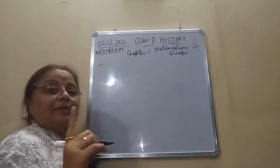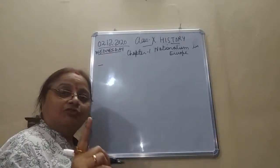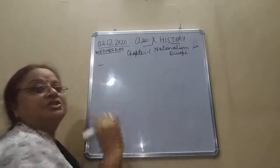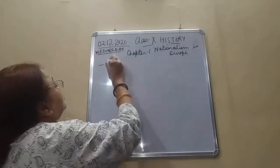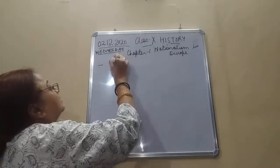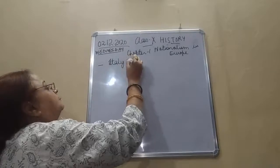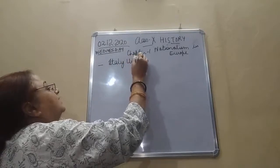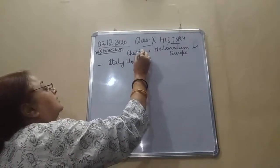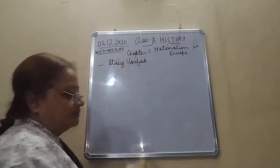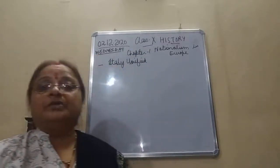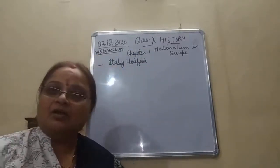In the last video we talked about the unification in Germany — the major role was played by Otto von Bismarck. Today we will be talking about Italian unification.